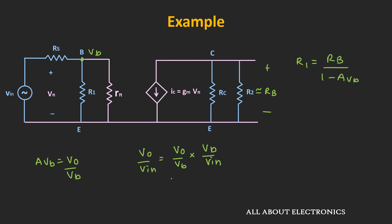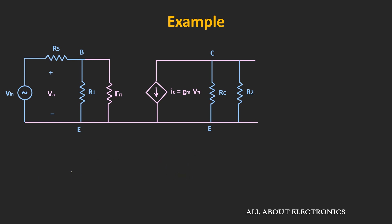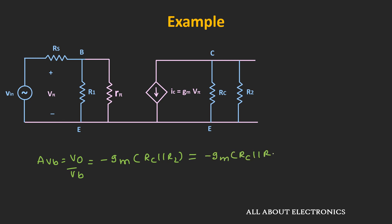First, let's find Vout/Vb. As discussed, Avb = −Gm × (RC ∥ R2) = −Gm × (RC ∥ RB) = −0.228 × (1 kΩ ∥ 53 kΩ). Calculating this value, Avb comes out as −224.